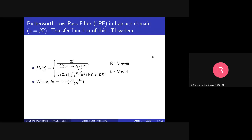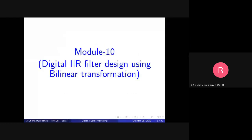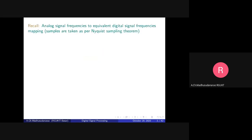That conversion is done with the help of bilinear transformation, or BLT. For digital IIR filter design using bilinear transformation, the goal is: first, design the concerned analog filter; once we have H(s), we transform s into z so that we end up with the required H(z), which is the desired digital filter.